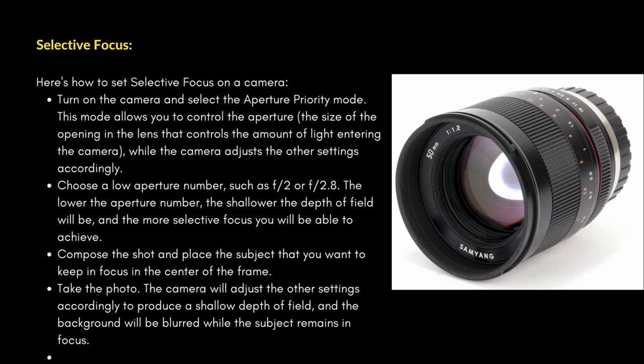Choose a low aperture number such as f/2 or f/2.8 — the lower the aperture number, the shallower the depth of field will be and the more selective focus you will be able to achieve. Compose the shot and place the subject you want to keep in focus in the center of the frame. Take the photo; the camera will adjust the other settings accordingly to produce a shallow depth of field, and the background will be blurred while the subject remains in focus.